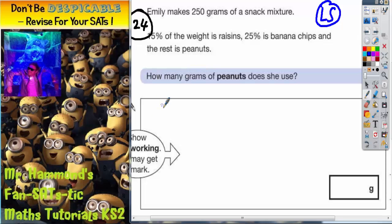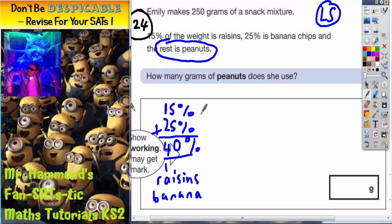Well, let's see what we've used so far. If 15% raisins and 25% banana chips, let's add that together. 5 and 5 is 10, carry the 1, 1, 2, 1 is 4. So that means we've already used 40% on raisins and banana chips. So the question is, what is the rest? Because it does say the rest is peanuts. Well, the whole snack mixture must be 100%, so if we've already used 40% on raisins and banana, peanuts must be the rest that gets us up from 40% to 100%. So peanuts must be 60% of the total mixture.